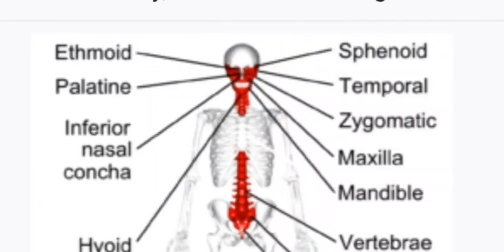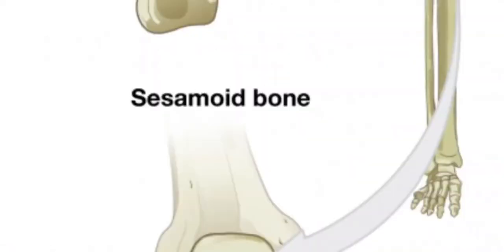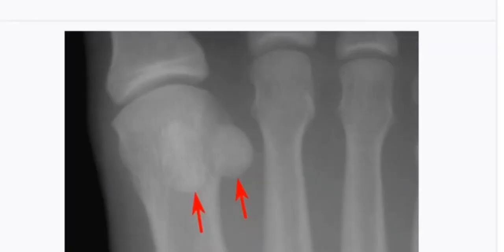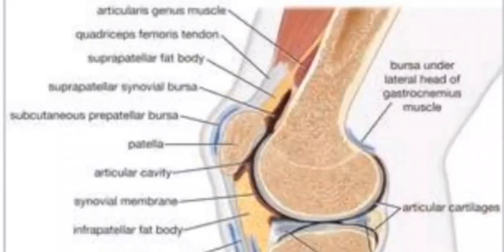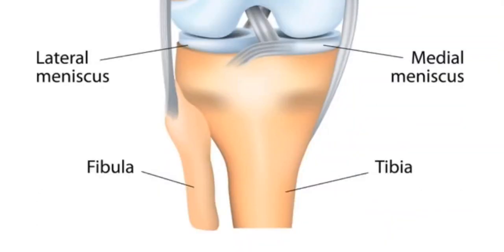Irregular bones are not flat, short, long, or sesamoid. They have a fairly complex shape, which helps protect internal organs. Sesamoid bones are bones embedded in the tendons. These small round bones are commonly found in the tendons of the hand, knee, and feet. Their function is to protect tendons from stress and wear. The patella, commonly referred to as the kneecap, is an example of a sesamoid bone.